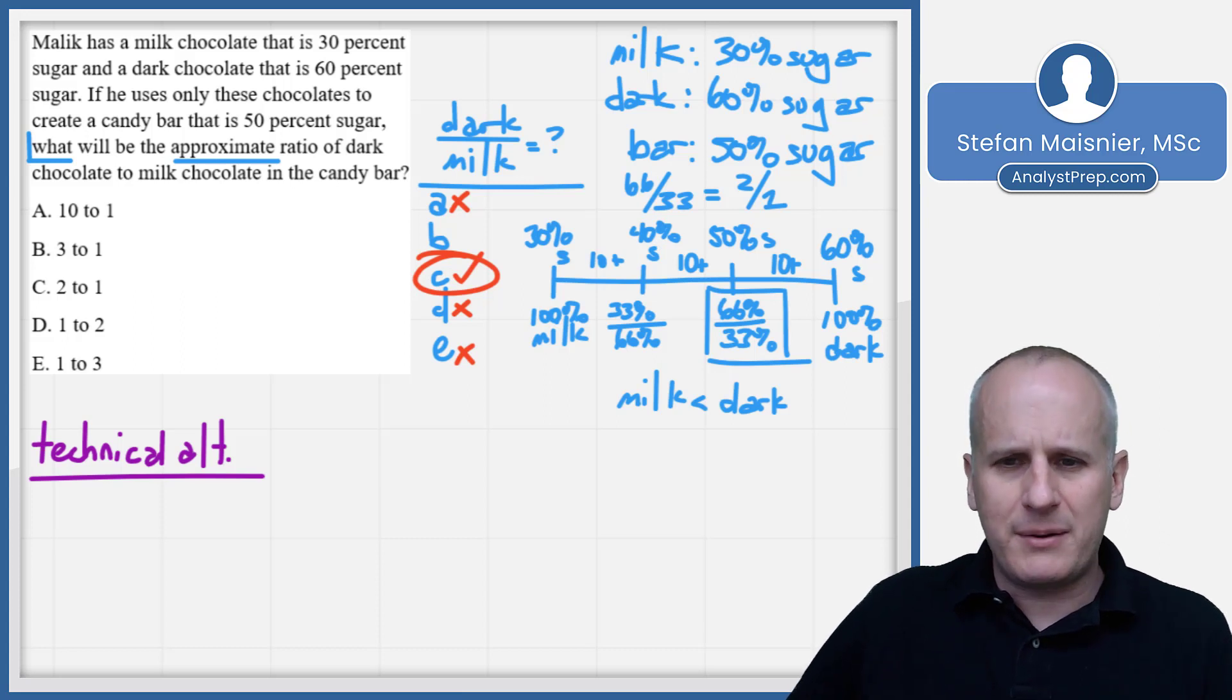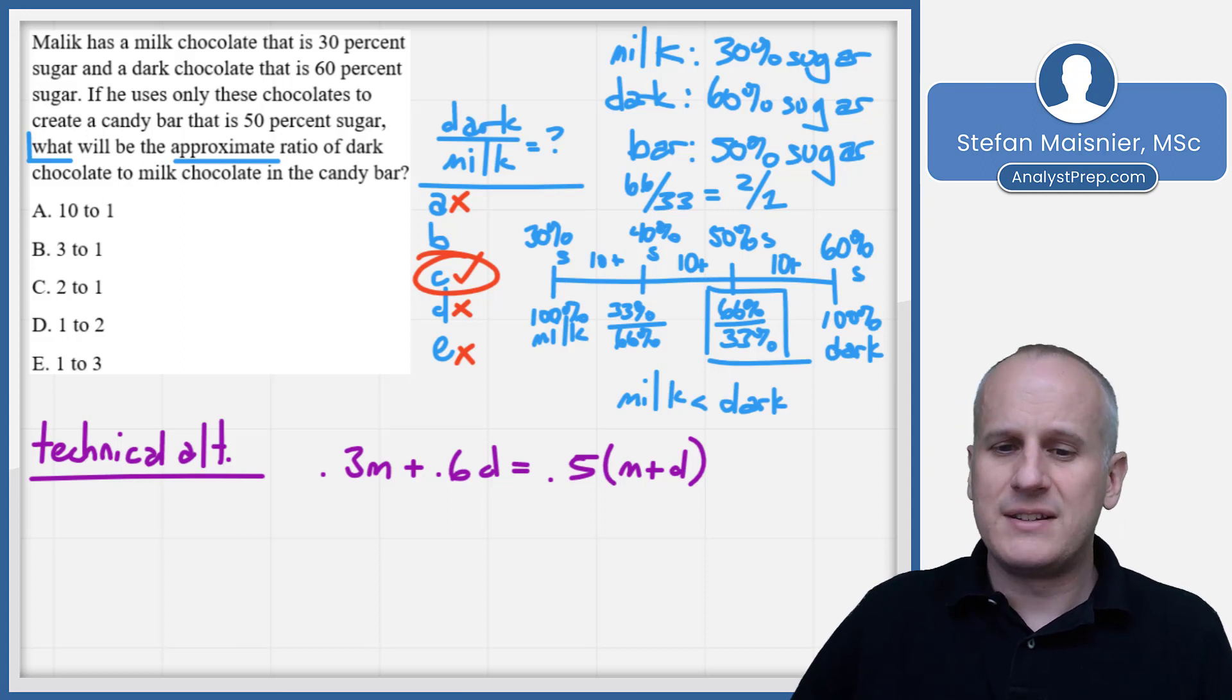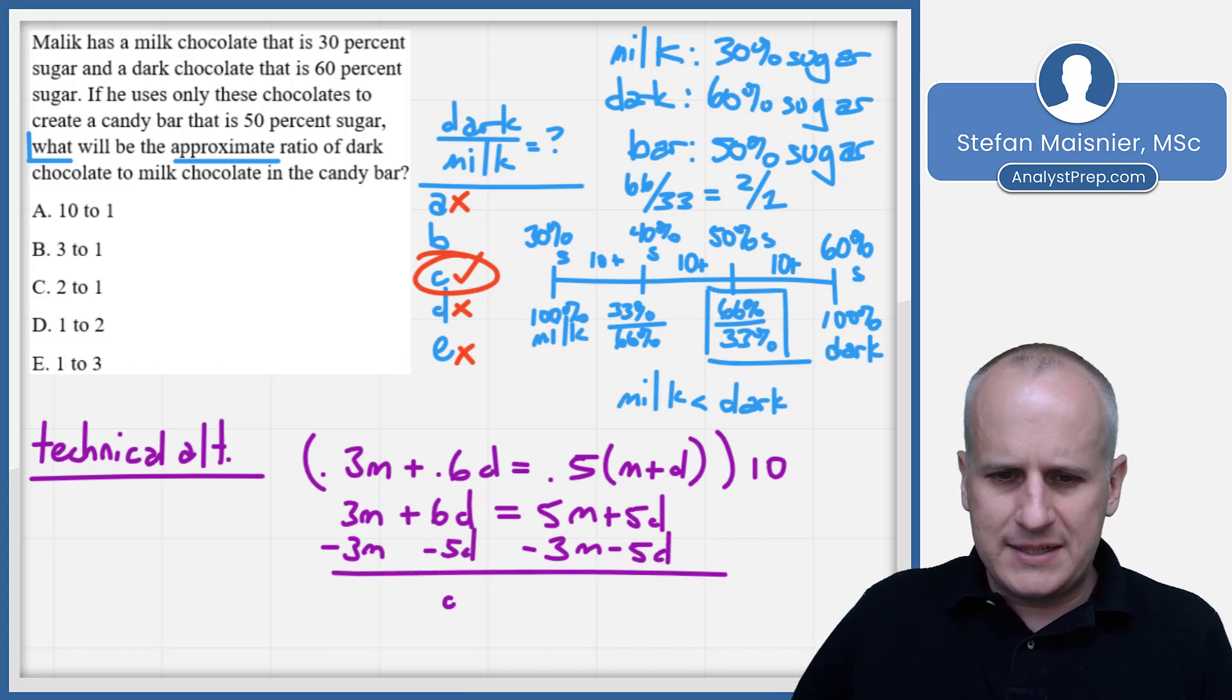But if you can do the algebra, you might have thought about doing something such as 0.3m plus 0.6d is going to be equal to 0.5 of m plus d. Because it's 30% milk, or 30% from the milk, 60% from the dark, it's going to be added up to 50% when you combine the two. So I would just go ahead and get rid of the decimal at the outset. So we now have 3m plus 6d is going to be equal to 5m plus 5d. Distribute that through, subtract out the 3m, subtract out the 5d. We get that d is equal to 2m. And so that means that 2m over m is our ratio, because d can be expressed in terms of m. The m's cancel out, and we once again have our 2 to 1 ratio.